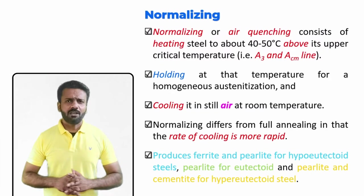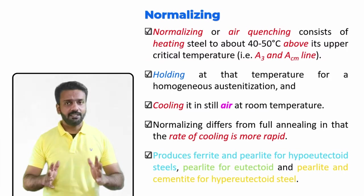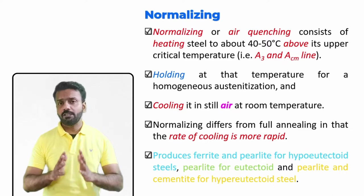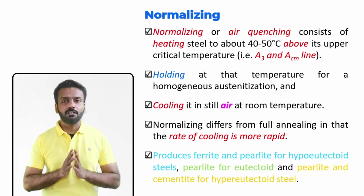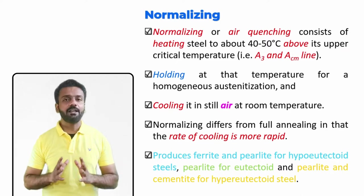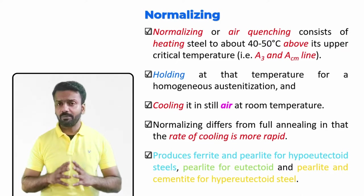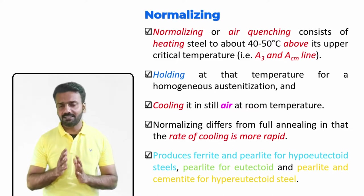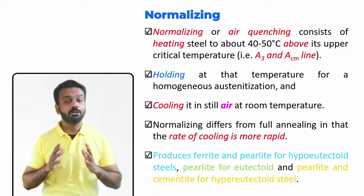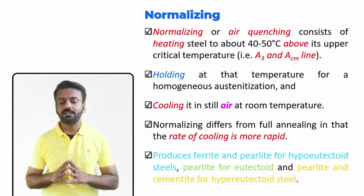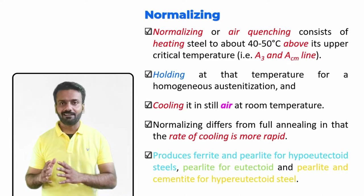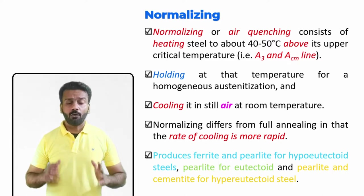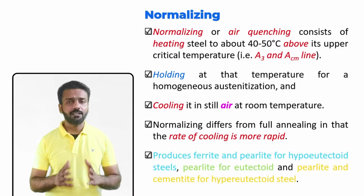In this video we will study all about normalizing heat treatment. I'm Dr. Wasim Sheikh. Normalizing heat treatment goes through the following stages: first, we heat the material to a certain temperature range, then we hold it at that temperature, and then we cool it in air. That is the main difference in normalizing heat treatment — the cooling medium is air.